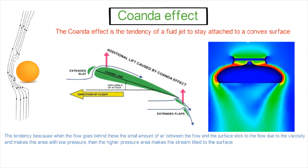This area between the curved or convex surface and the streamline has low pressure, because this little amount of air sticks to the streamline. After this amount of air sticks to the streamline and this area has low pressure, then the other side of the streamline has a higher pressure. This higher pressure forces the streamline to take this convex surface path, and this is why the Coanda effect happens.